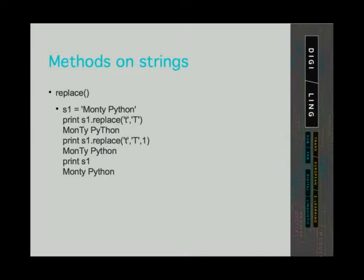On this slide you can see some examples. We have a string Monty Python stored in a variable s1. In the first case we replaced lowercase letter t with uppercase letter T. In the second case we did the same replacement, but only wanted it to occur once. So the program returned a new string where only the first occurrence of lowercase letter t was changed to uppercase T. Again, the original string has not changed.